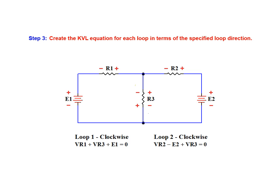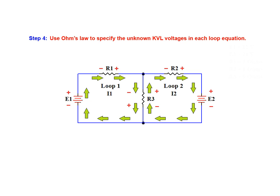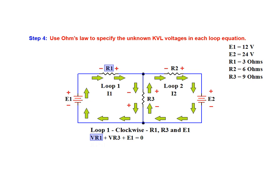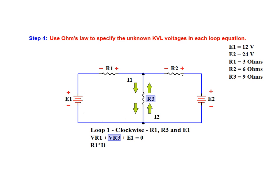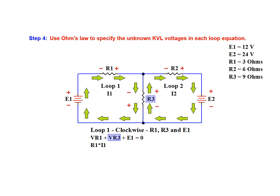We now have the KVL equations for both loops and move on to step 4. In this step, we use Ohm's law to re-express the voltage drops in each loop equation. Beginning with loop 1, the R1 voltage drop can be restated as R1 times current I1. When expressing the voltage drop across R3, it's important to note that the current through R3 is a combination of I1 and I2, flowing in opposite directions. Therefore, the voltage drop across R3 is expressed as R3 times (I1 minus I2) for loop 1, and as R3 times (I2 minus I1) when dealing with loop 2.